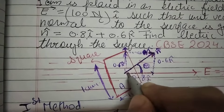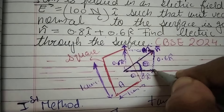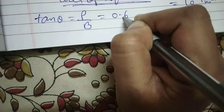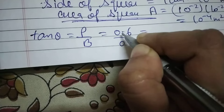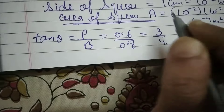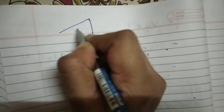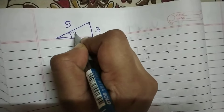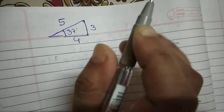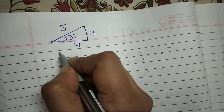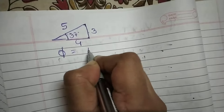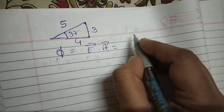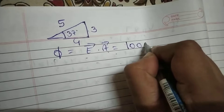Now let's find tan theta. Tan theta equals perpendicular upon base. In the diagram, perpendicular is 0.6 and base is 0.8, so tan theta = 0.6 divided by 0.8. This gives us 3/4, which is a famous 3-4-5 triangle. So this is 3, this is 4, and the hypotenuse is 5, giving us theta equals 37 degrees.